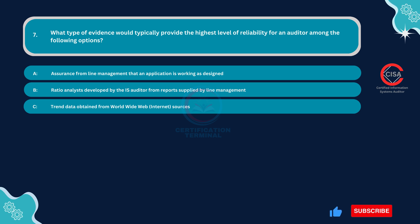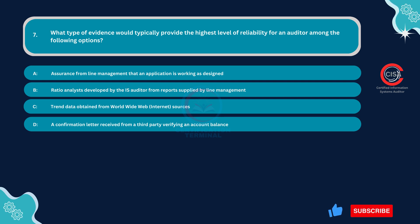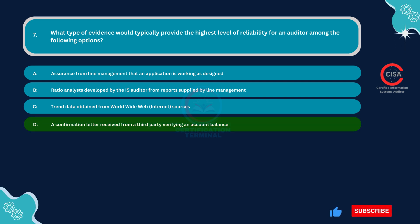Option D: A confirmation letter received from a third party verifying an account balance. The correct answer is Option D: A confirmation letter received from a third party verifying an account balance. Third-party confirmation letters are obtained directly from external sources independent of the entity being audited, which enhances the reliability of the information provided as it is less susceptible to bias or manipulation.